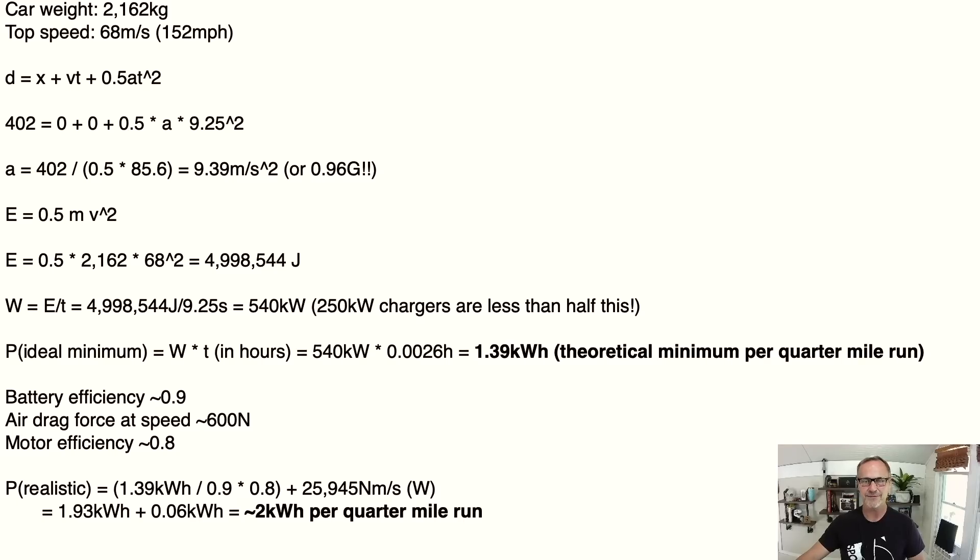And then of course we can look at the idealized power or the ideal minimum amount of power. So that's watts times time but the time is in hours. So we have 540 kilowatts times 0.0026 hours, that's 9.25 seconds, and that gives us a 1.39 kilowatt hour theoretical minimum per quarter mile run. So it's got to be more than that because our battery efficiency is about 90 percent, the motor efficiency is about 80 percent, and then the air drag force at speed I guesstimated at 40 meters per second. So the power realistic would be the theoretical minimum divided by 0.9 times 0.8 plus 25,945 watts. So we add that all together and we get very very close to 2 kilowatt hours per quarter mile run.